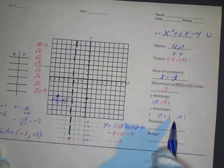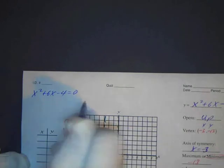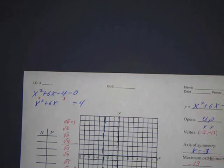Now we find the x-intercepts by setting y equal to zero: x squared plus 6x minus 4 equals zero. We can't factor this, so we'll use completing the square. It's a good candidate because the coefficient of x squared is 1 and the middle coefficient is even. Move the negative 4: x squared plus 6x equals 4. Half of 6 is 3, and 3 squared is 9, so add 9 to both sides.